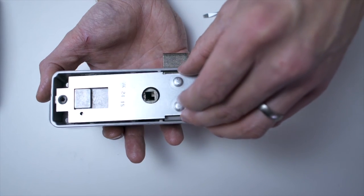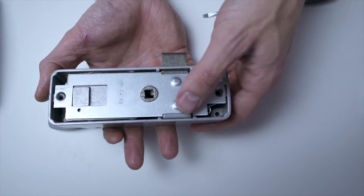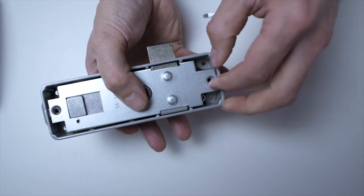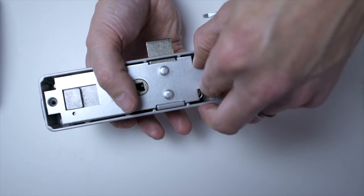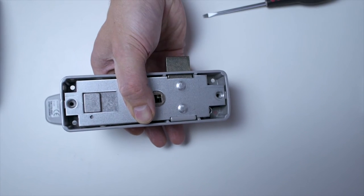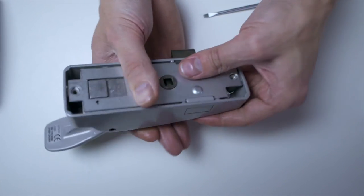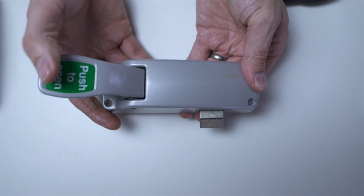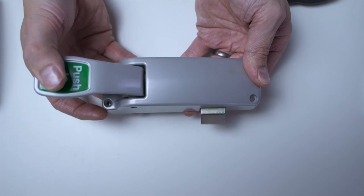And then replace the cover plate. Make sure everything's lined up and that should almost snap into place. There we go. Obviously then replace your two fixing screws, and there we go, we have the bolt reversed.